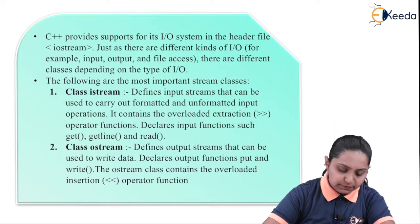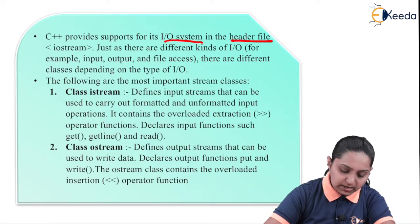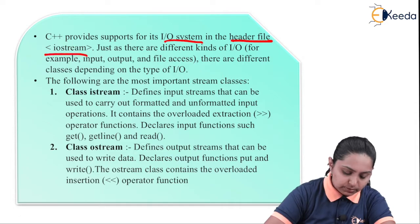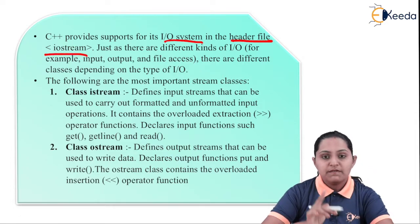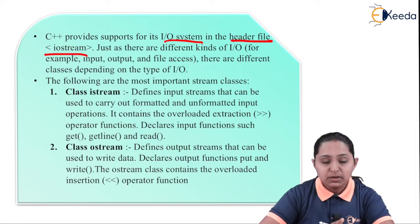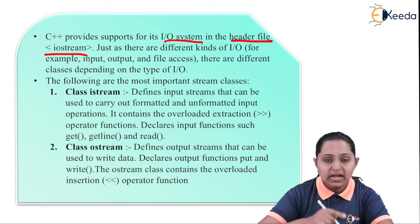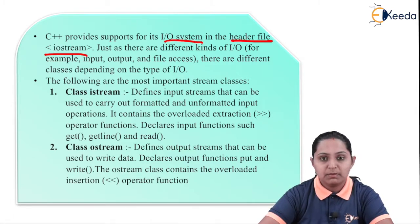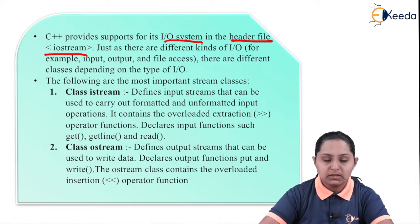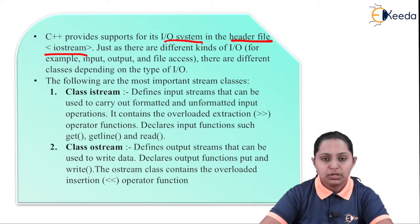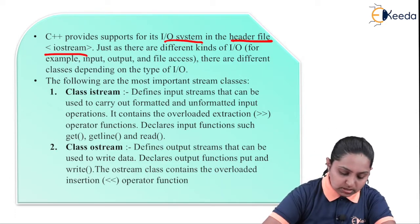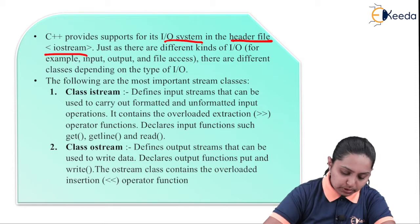C++ provides its IO system in a header file called iostream.h. For basic coding, whenever we include iostream.h, that header file is used to perform input and output streaming, and you can perform different input and output operations. There are different kinds of IO for input, output, and file access.